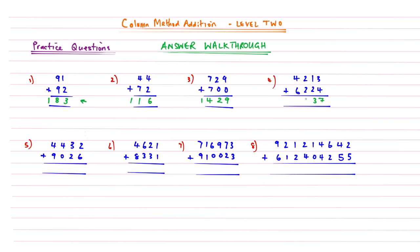Question four: 3 add 4 is 7; 1 add 2 is 3; 2 add 2 is 4; then 4 add 6 gives 10. Question five: 2 add 6 is 8; 3 add 2 is 5; 4 add nothing is 4; and 4 add 9 gives 13.